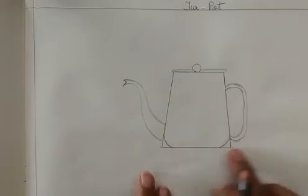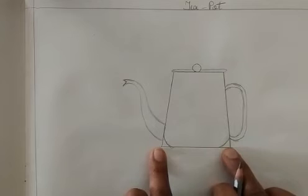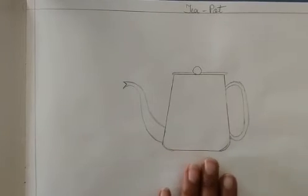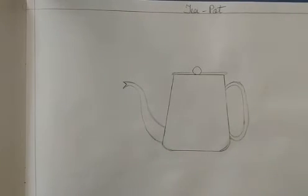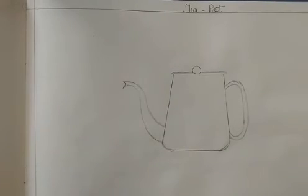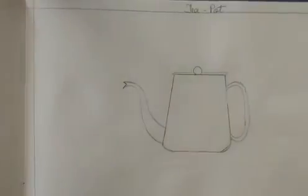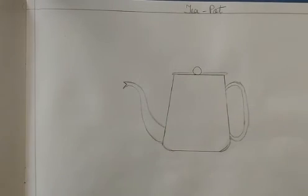Now erase the extra lines at the corners like this. So this is our teapot. You can draw it and fill it like this, here, here, here. Thank you.